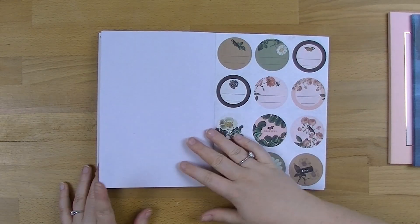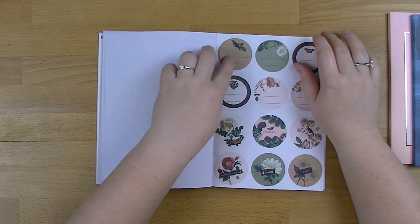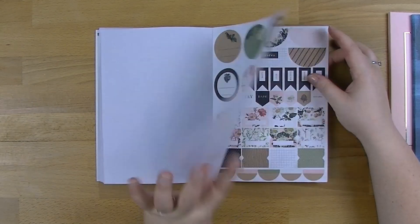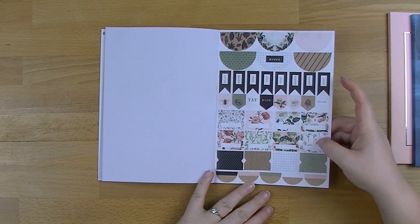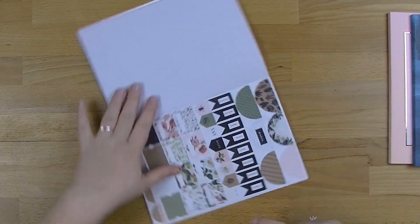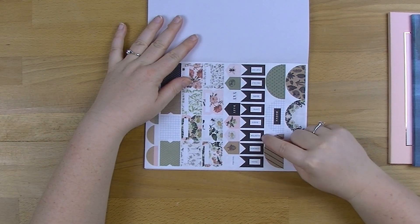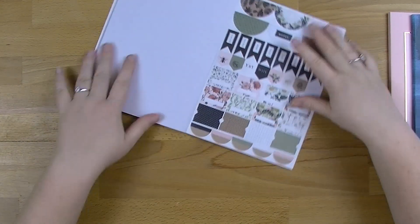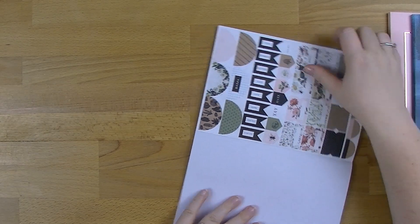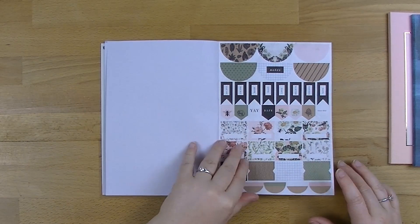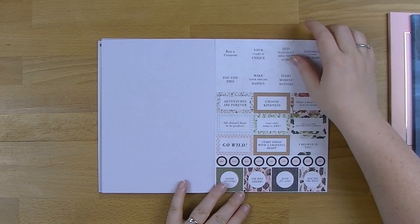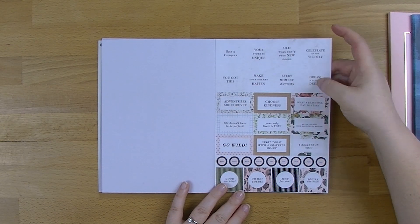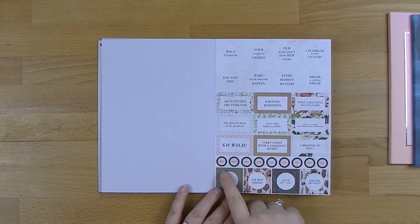And then we've got some round kind of labels and then just some normal stickers, some more tabs, some more half circles. These are really cute. You've got some believe, remember, note, start now, this day sort of flags. That's really cool. They're new. And then we've got some more quotes at the back here in the little square.